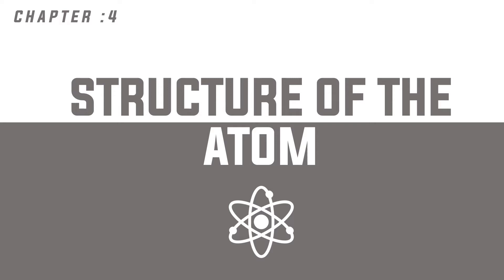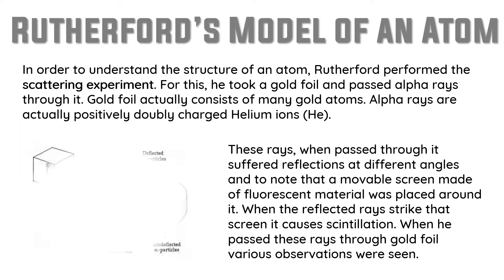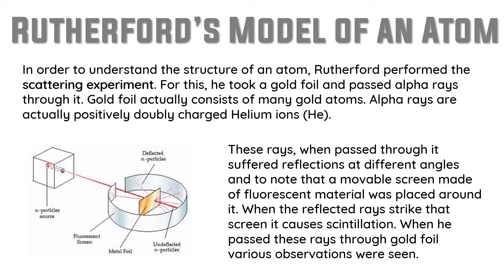Let us see Rutherford's model of an atom. According to Thomson's model, we know that an atom consists of positively charged protons and negatively charged electrons, but we don't know the location of protons and electrons — we don't know the arrangement or the pattern of an atom. So the next model is Rutherford's model of an atom.